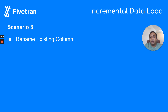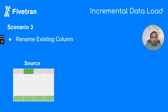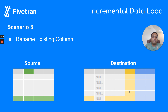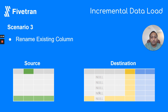If you have renamed an existing column, Fivetran Teleport Sync creates a new column — shown as the orange-colored column — and transfers all the data from the previous column's name into this new column, then nullifies the previous column's values. This is how Fivetran handles data that gets incrementally loaded across all the scenarios mentioned.